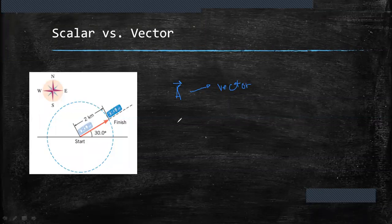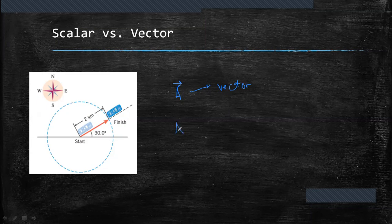So when you see a letter A only, that means it gives only the magnitude. Therefore, it is a scalar quantity. While a vector with an arrow ahead gives us a sense of direction.